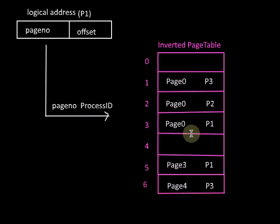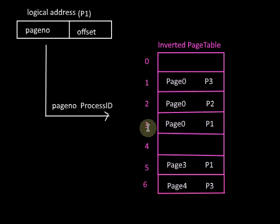For example, searching for page 0 of process 1, we scan the inverted page table and find the entry showing it is loaded to frame 3 of main memory. The problem with the inverted page table is that even though it saves a lot of memory space, the search time is high because we must search the entire inverted page table to obtain the physical address.